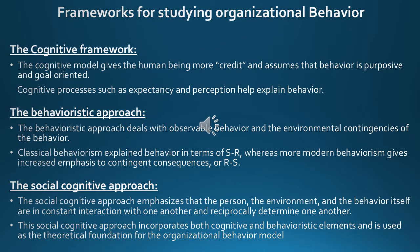The behavioristic approach deals with observable behavior and the environmental contingencies of that behavior. Classical behaviorism explained behavior in terms of stimulus-response, whereas more modern behaviorism places increased emphasis on contingent consequences — meaning that behavior is a response to seeking the rewards that stimuli may present.